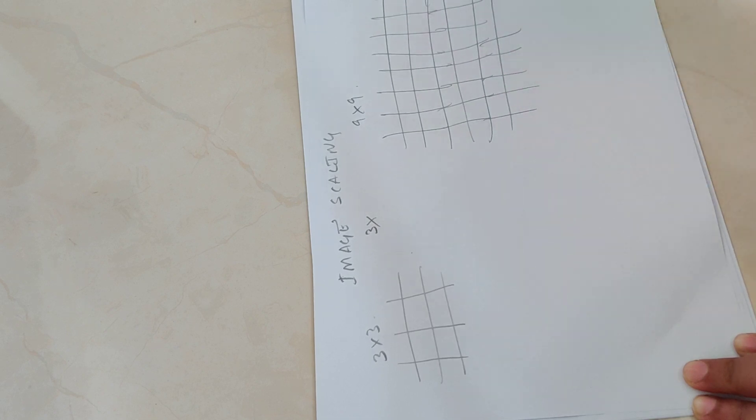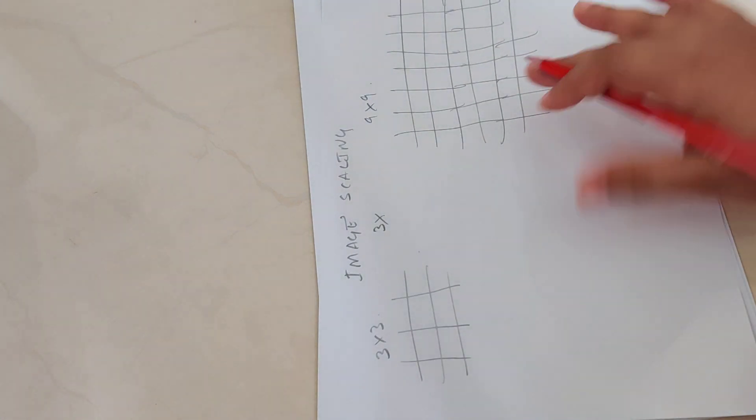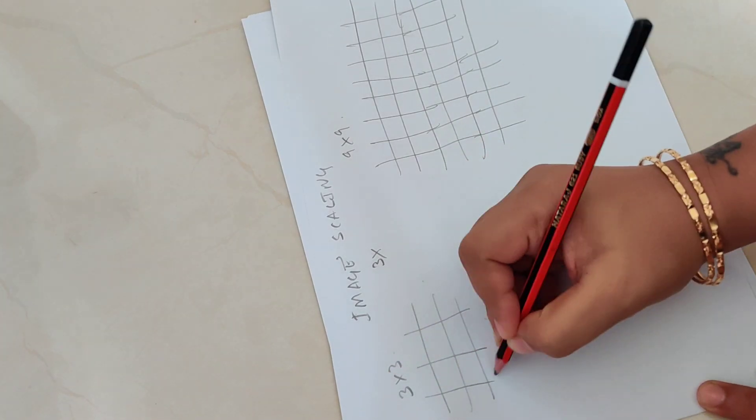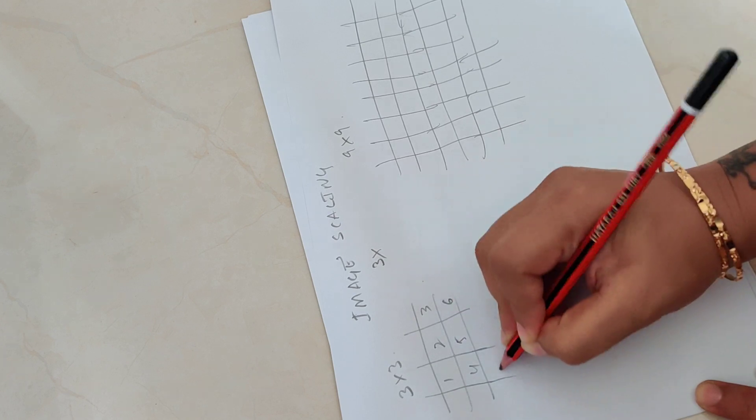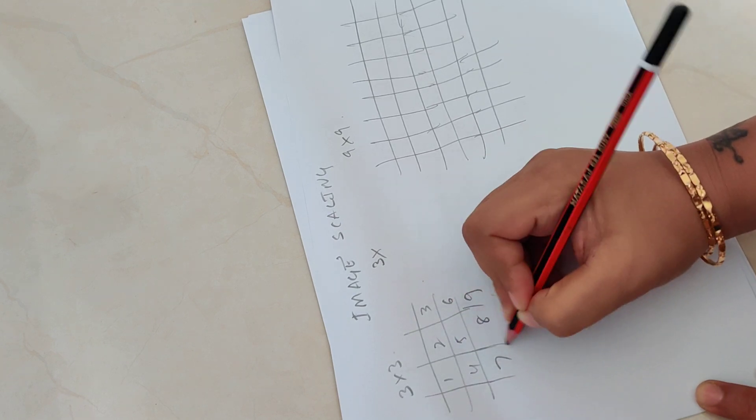I know it is not 9 x 9 but I think it will do well to explain the concept. So let's say this 3 x 3 pixels have values 1, 2, 3, 4, 5, 6, 7, 8, 9.